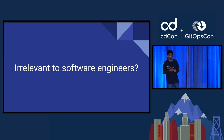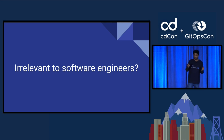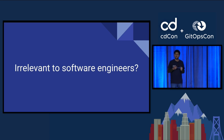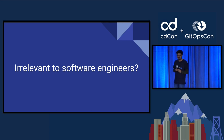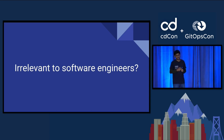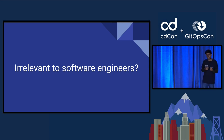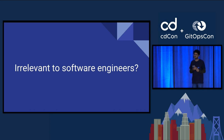Some examples include commit messages, PRs, tests, error messages, documentation, et cetera. Empathy is an important aspect in software development because it enables developers to create products that are more user-friendly and meet the needs of their intended audience. When developers have empathy for their users, they can anticipate potential issues and design solutions to address those, leading to a more satisfied and loyal user base, better user engagement, and increased success for their product.